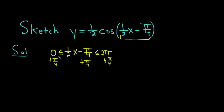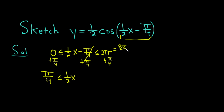This is a compound inequality — it's really two inequalities in one. These cancel, so on the left we get π/4 ≤ one-half x. On the right, we add 2π + π/4. Thinking of 2π as 8π/4, we get 8π/4 + π/4 = 9π/4. So π/4 ≤ one-half x ≤ 9π/4.